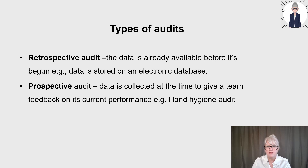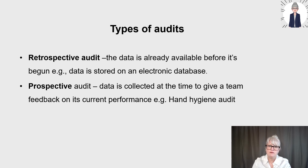There are different types of audits, methods and audit tools. Two key types are retrospective audit and prospective audit. Retrospective audit is where the data is already available before the audit's begun — for example, data stored on an electronic database, searchable for specific criteria such as patient data, interventional treatment or care pathway data, such as auditing from referral to cancer treatment. Prospective audit is where data is collected at the time to give the team feedback on its current performance — a simple example being hand hygiene audit where staff are observed in clinical areas, with their technique compared against the national protocol, expressed as a percentage of good hand hygiene compliance.